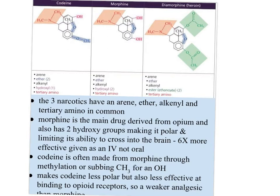Looking at the structures of the three narcotics, you notice they all have an arene — that benzene ring. They all have an ether, shown in blue, and there are two of them. They all have the alkenal group, the CH₂ group. They all have a hydroxyl group, highlighted in purple-pink, and they all have a tertiary amine, highlighted in orange.